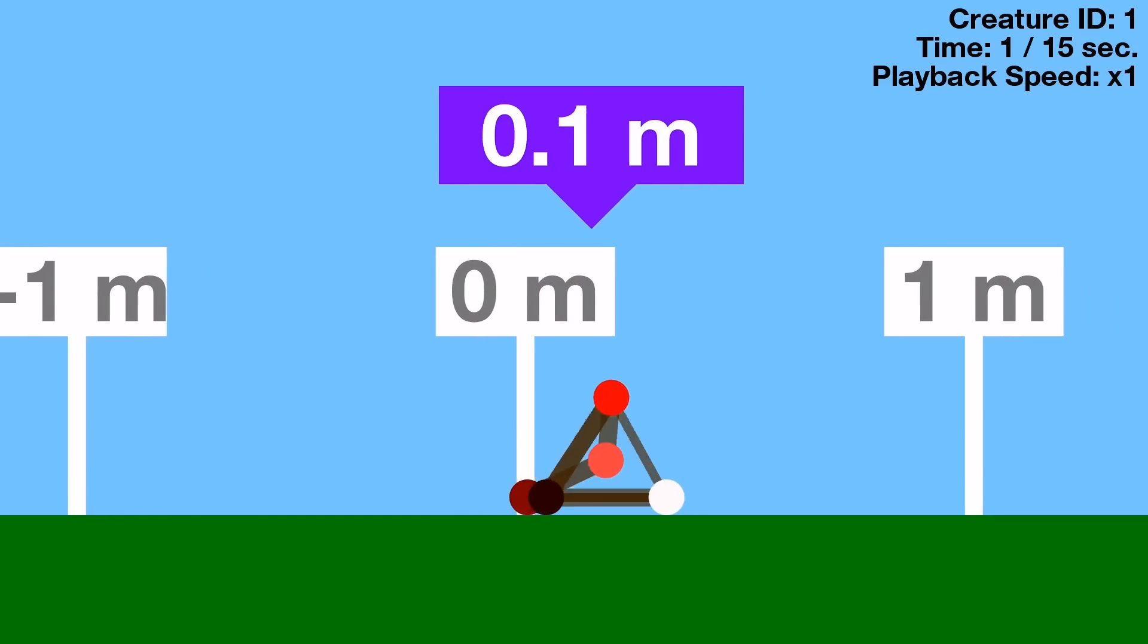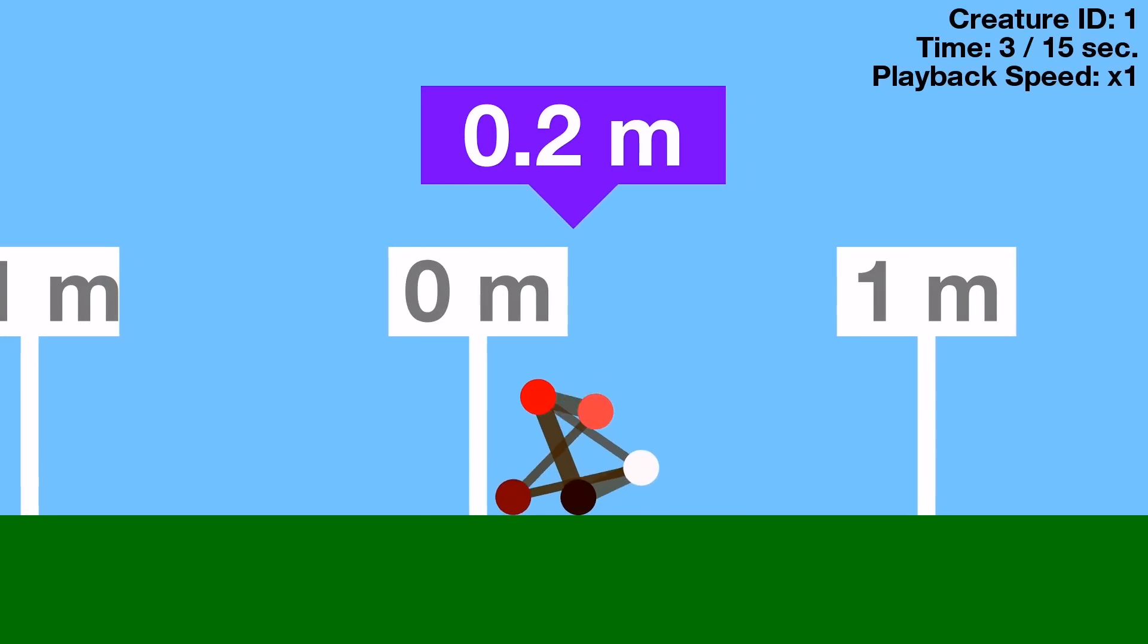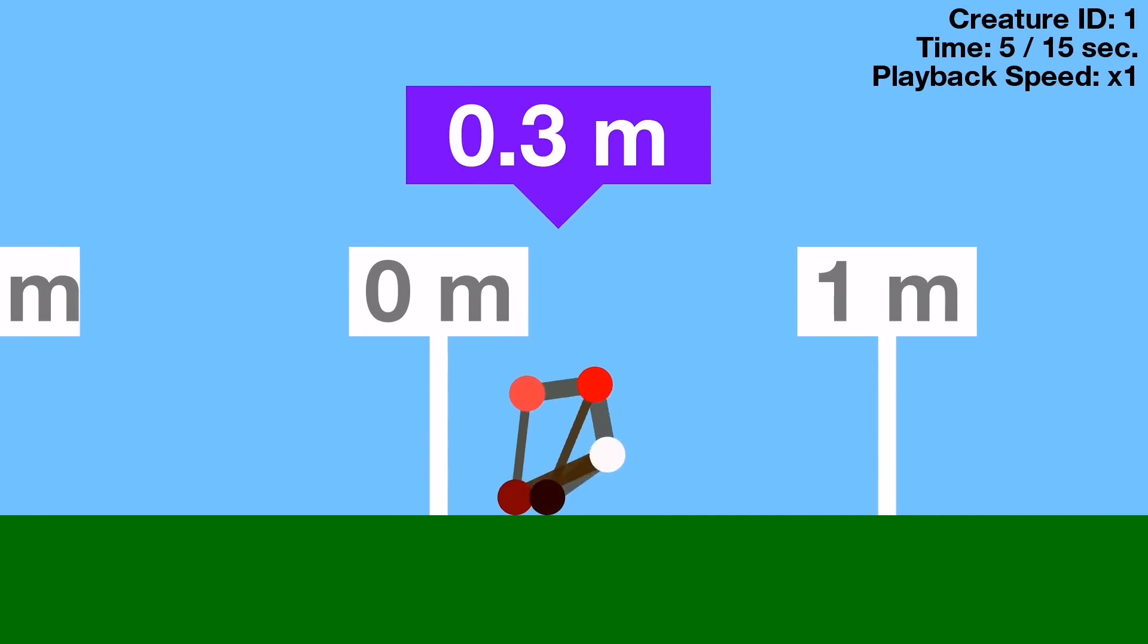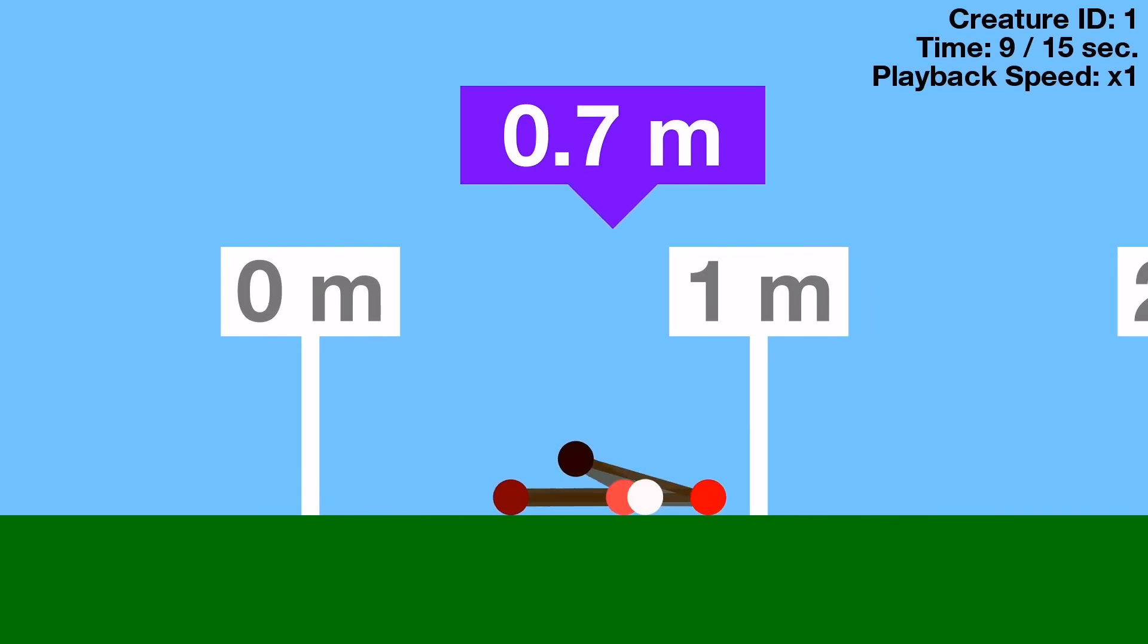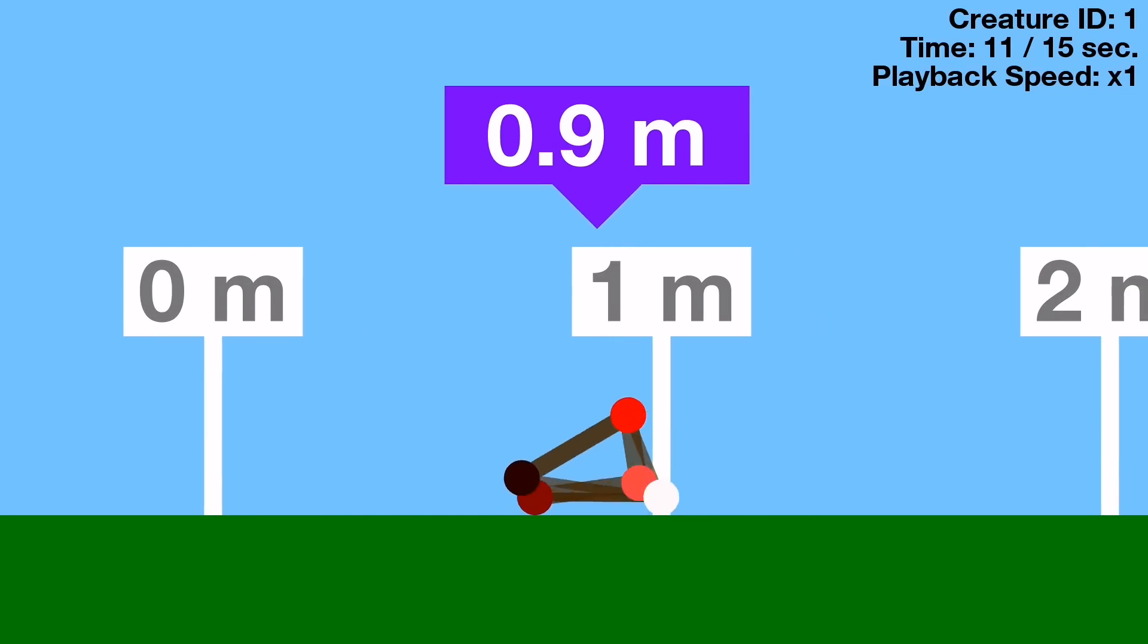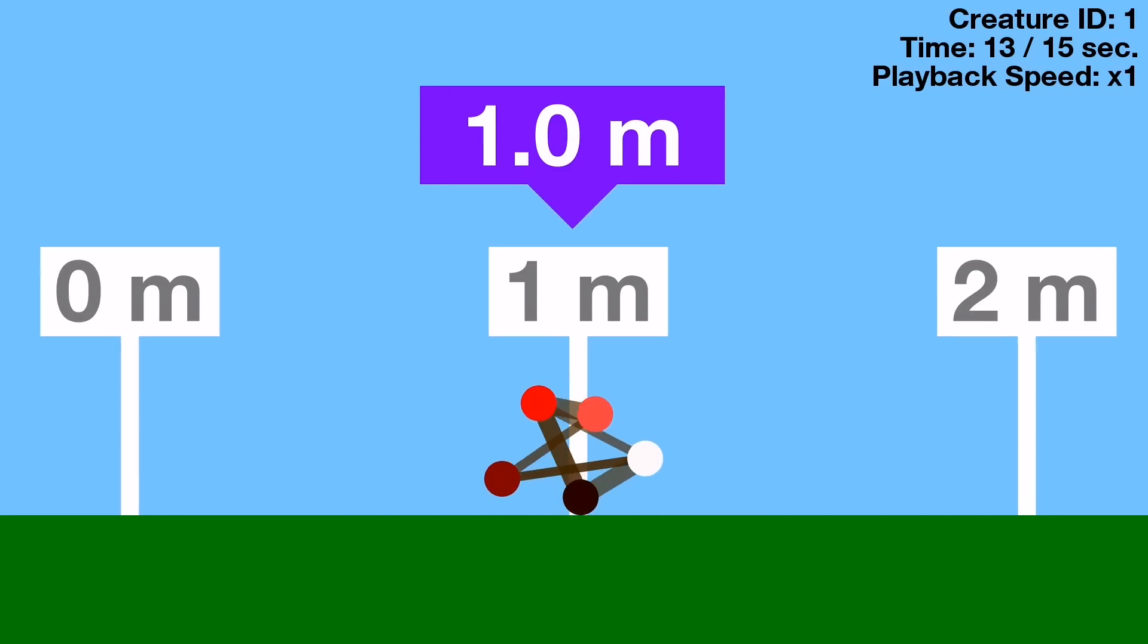Here is our first creature! It's got just 15 seconds to prove how well it can move to the right. But it's not doing very well. It's just getting up and then collapsing and then getting up and collapsing. I mean, it is going right, which was the goal, but it's not going very fast.